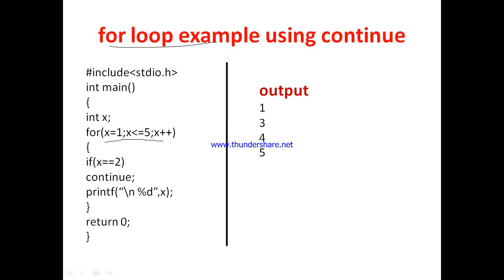Now let us see the second example. Here for x = 1, x less than or equal to 5, x++. The loop executes for x = 1, 2, 3, 4, 5. Inside the loop, printf displays the value of x. But when x becomes 2, the if condition x == 2 is satisfied, so continue is executed and the printf statement is skipped for x = 2. So the output is: 1, 3, 4, 5 — only 2 is not printed.